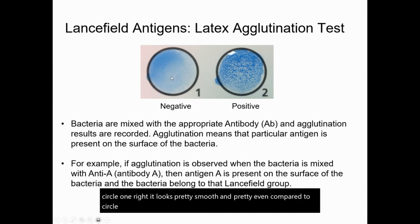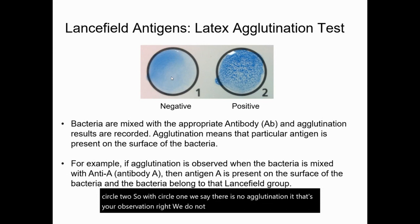With circle one, we say there is no agglutination — that's your observation. We do not observe clumping.